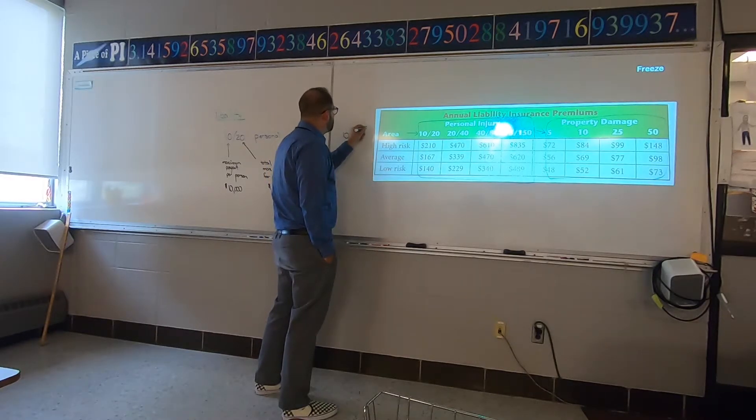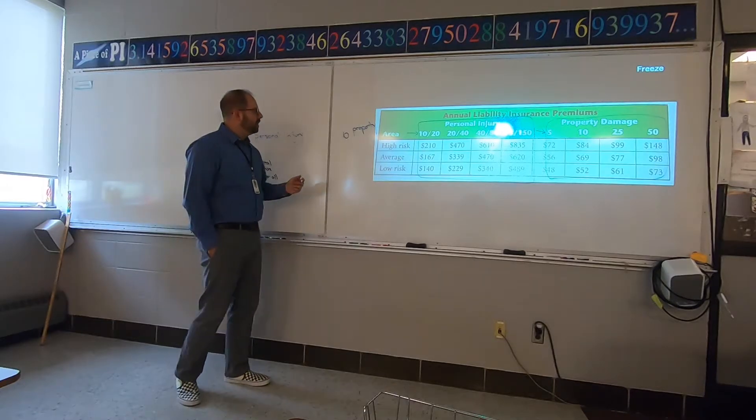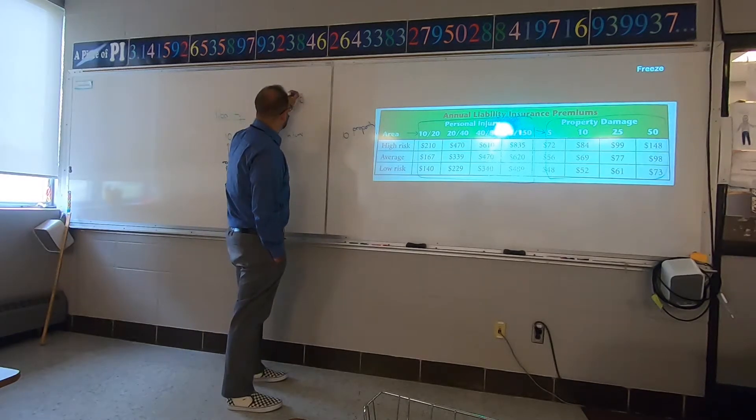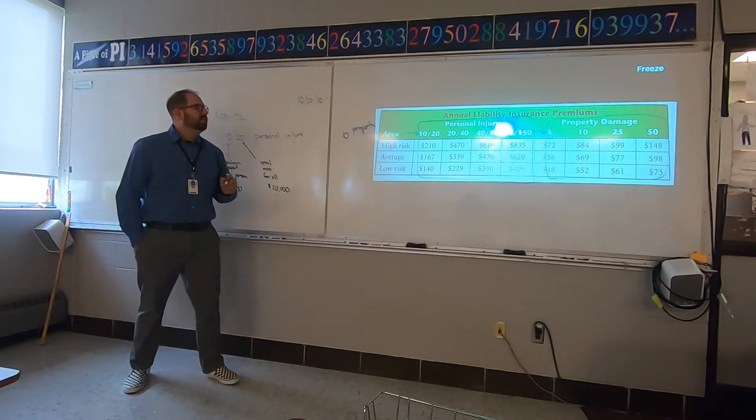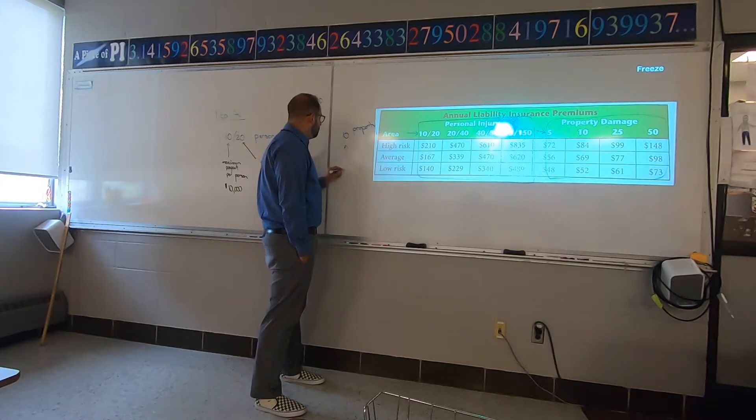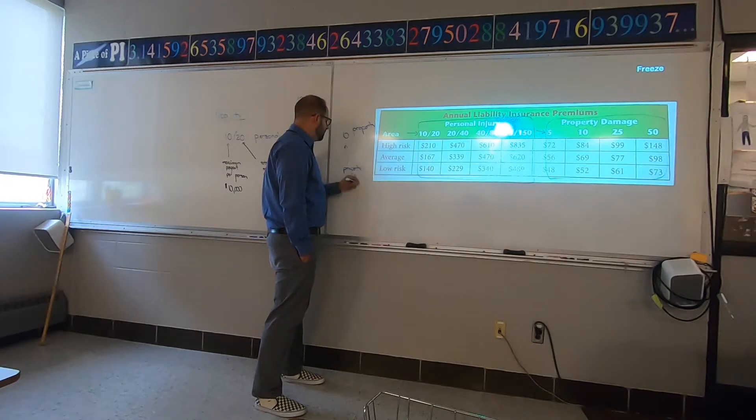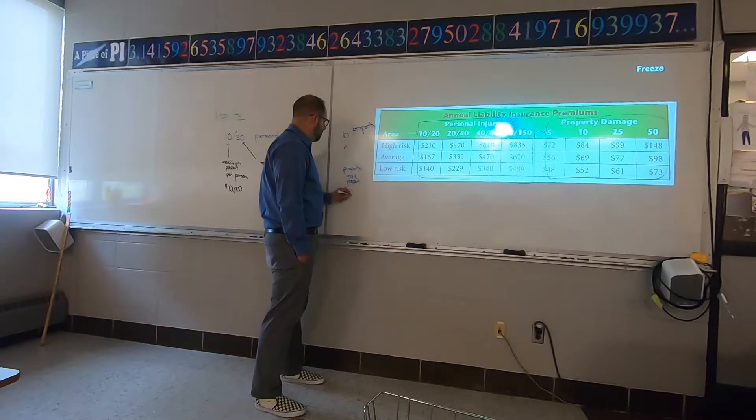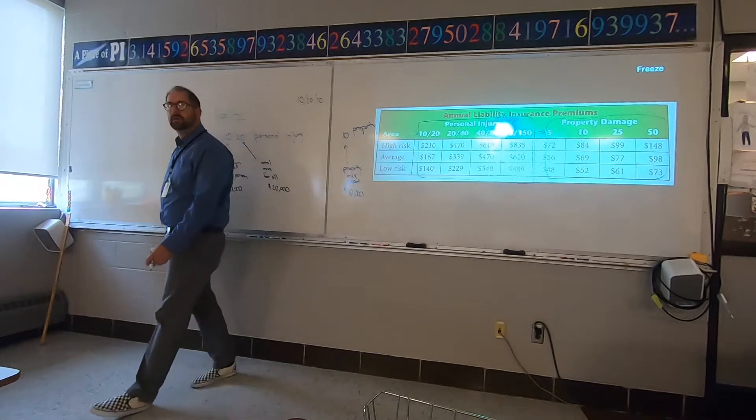When you see this number, this will be the third number on an insurance card. This is how it'd be written on most insurances. It'd be written like this: 10/20/10. This would cover property damage. So this would cover all the property that was damaged. It would be a max payout of $10,000.